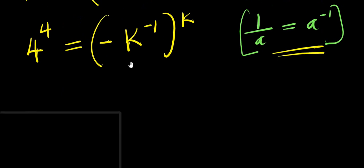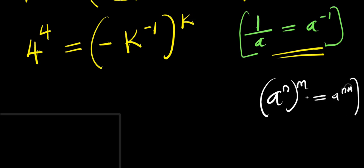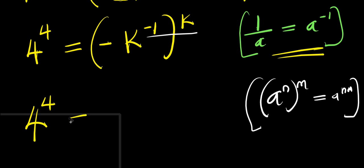From here we go back to this simple identity: if you have a power n, power m equals a power n times m. Let's multiply this out. So from here we have 4 power 4 equals negative k power negative 1 times k.